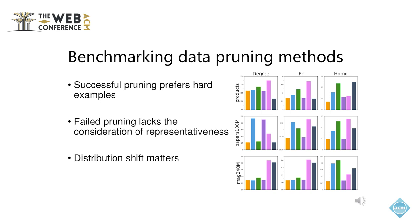Lastly, the semi-supervised setting of node classification tasks allows data pruning methods to utilize the features of test nodes, which, intuitively speaking, is helpful for mitigating the distribution shift issue. The most salient characteristic that distinguishes our method from compared ones is its exploitation of the test nodes, which encourages subsets with fewer distribution shifts.